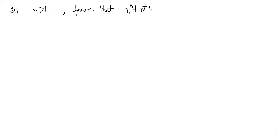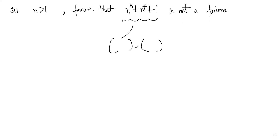For any integer n greater than one, prove that n⁵ + n⁴ + 1 is not a prime. A way to prove something is not a prime is to show it is a product of two integers where neither of those integers is one. If you can factorize this expression, then we will be sorted. The way to factorize it is to find some roots for this polynomial.